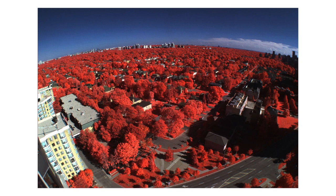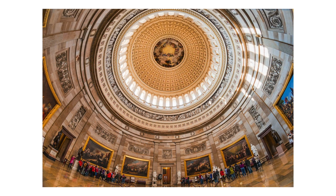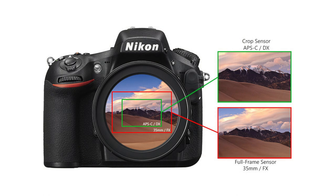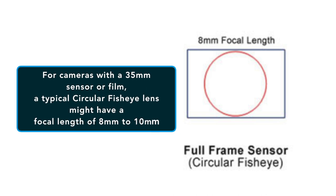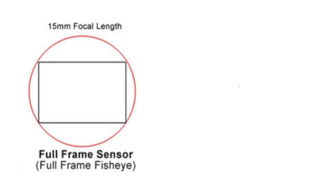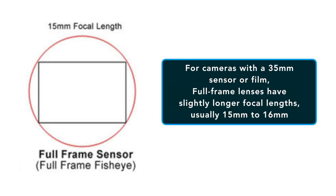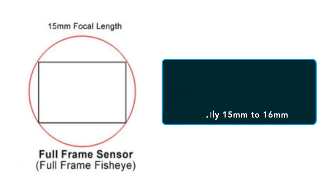This makes them more suitable for practical purposes such as traditional landscape photography and shooting building interiors. For cameras with a 35 millimeter sensor or film inside, a typical circular fisheye lens might have a focal length around 8 to 10 millimeters. Full-frame lenses have slightly longer focal lengths, usually 15 or 16 millimeters.